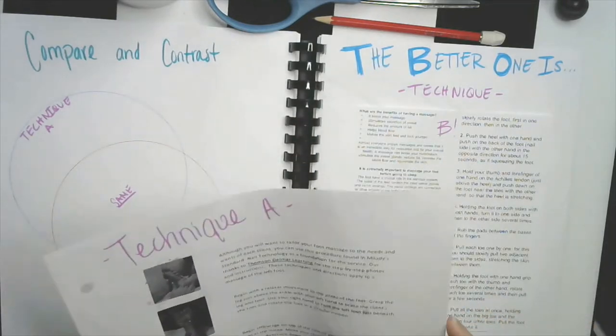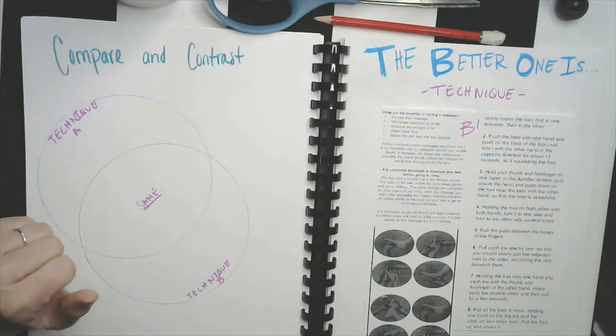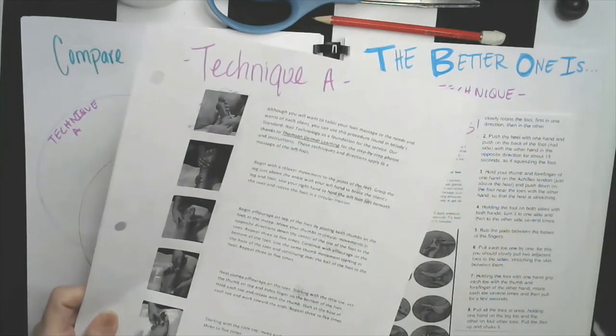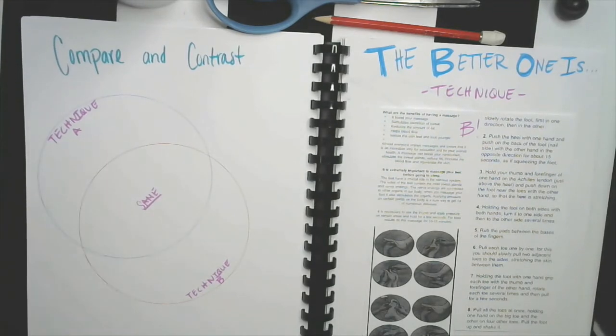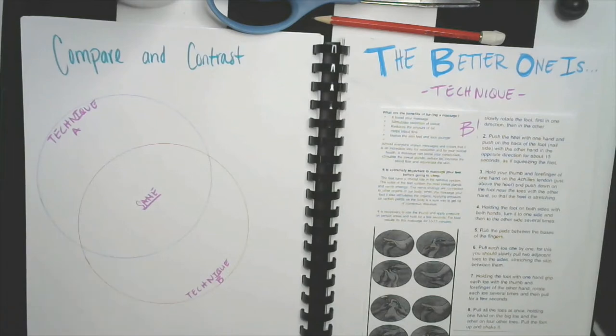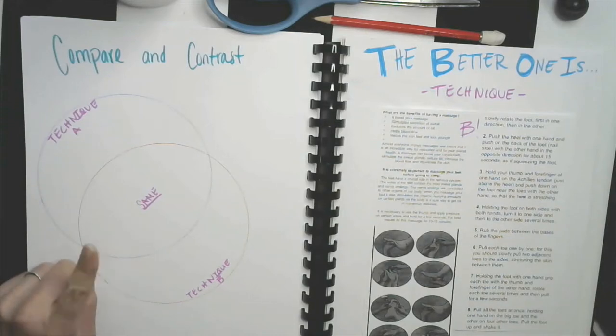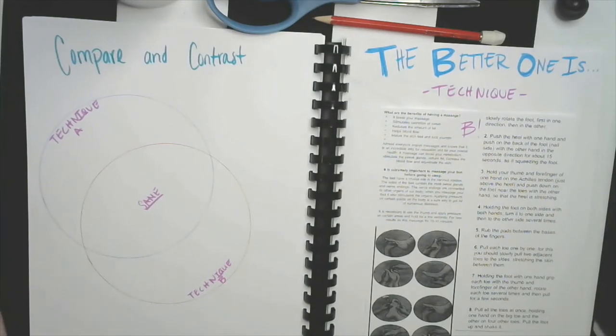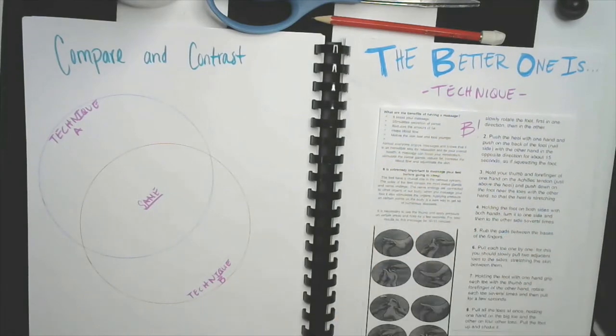You want to write down which technique it is. Then what you're going to do is compare and contrast technique A that has the rectangles with technique B which is here. You're going to draw your two circles - what do they have that's different from each other and what do they have that's the same - kind of to justify why you chose that.